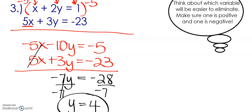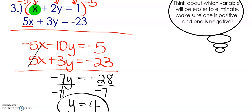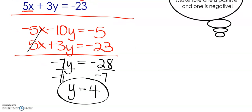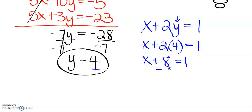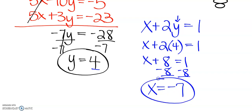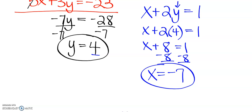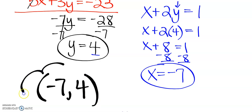Now let's substitute back into the first equation: x plus 2y equals 1. Y equals 4, so we substitute 4 in for y: x plus 2 times 4 equals 1. Multiply 2 times 4 to get x plus 8 equals 1. Subtract 8 from both sides: x equals 1 minus 8, which is negative 7. So our solution is x equals negative 7, y equals 4, or the point (−7, 4).